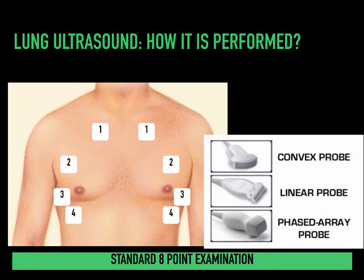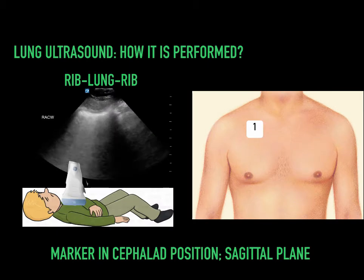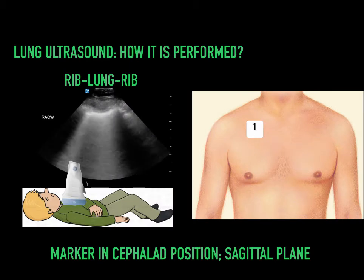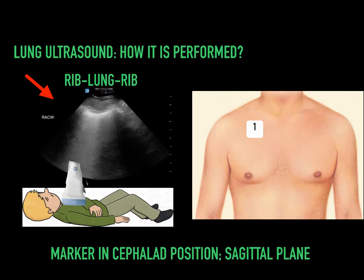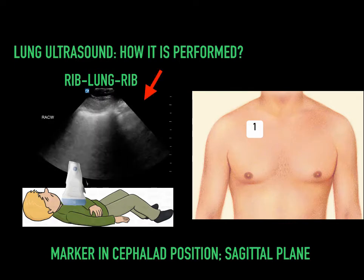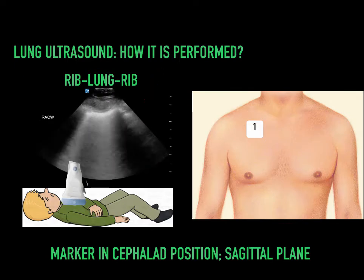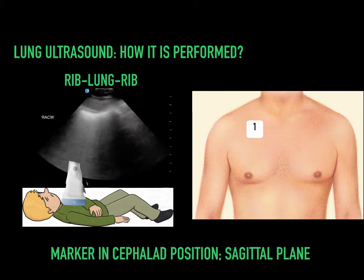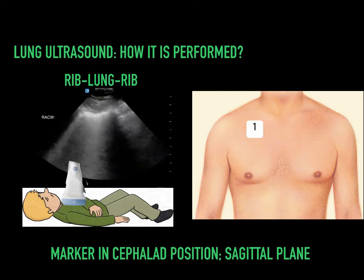You could use a variety of probes, but most commonly employed would be the linear probe, as there's high resolution for the pleura, and the phased array probe as its versatility is pretty much unmatched in the point-of-care world. We typically perform it in conventional radiological fashion with the head being screen left and the feet being screen right. In the sonographic image, you can see a rib-pleura-rib shadow, which is fairly characteristic of lung ultrasound and is standard anatomic position.